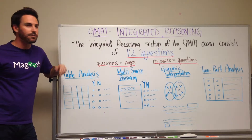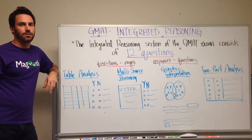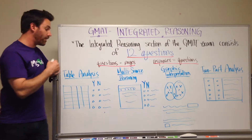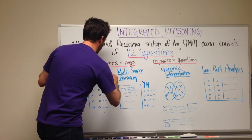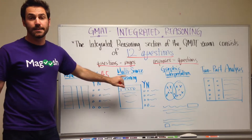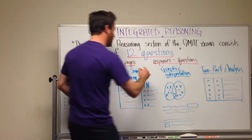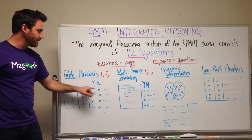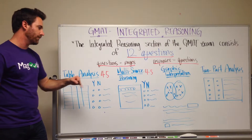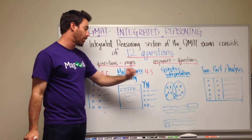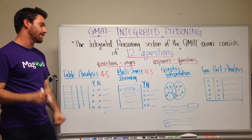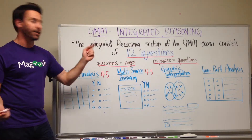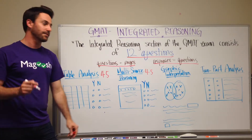But then on each page you're going to have multiple things that you're doing — responses, questions, whatever you want to call it. Table analysis can have anywhere from four to five questions, and multi-source reasoning is the same, four to five questions. In both of these you're evaluating a statement as yes or no, true or false. You'll have four or maybe five of these sentences to evaluate, so it's really like having four questions, not one question, as the GMAT seems to think.